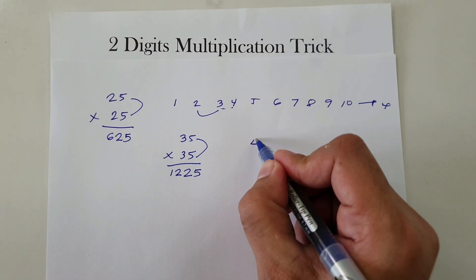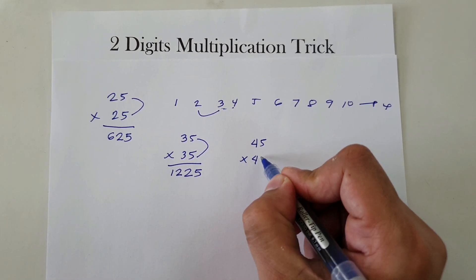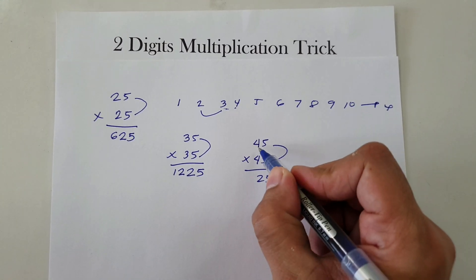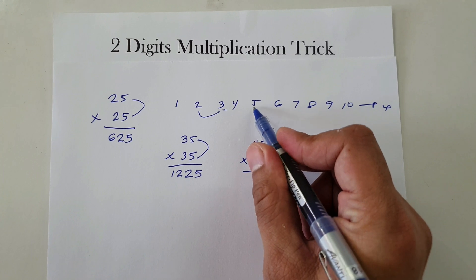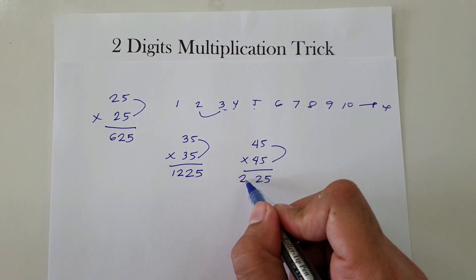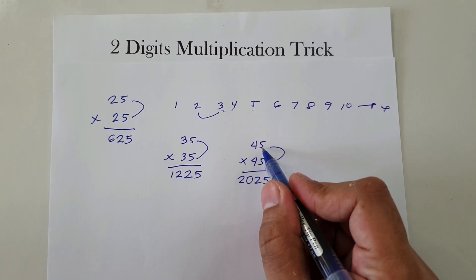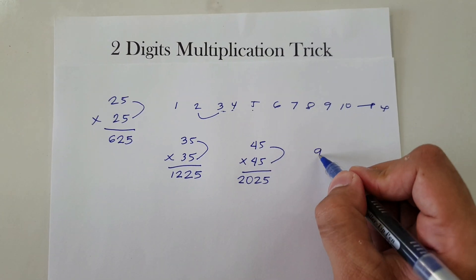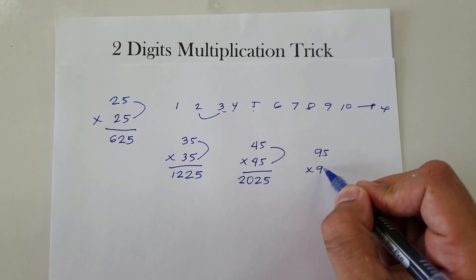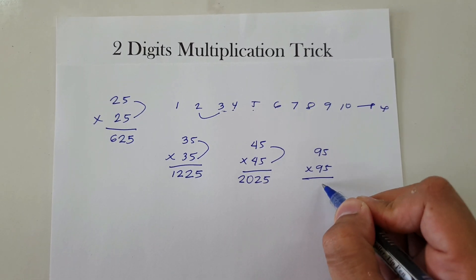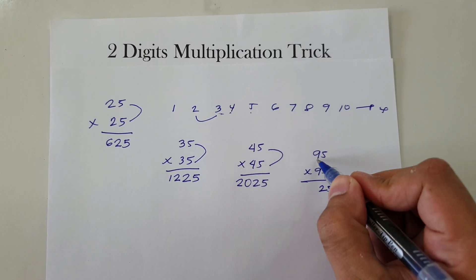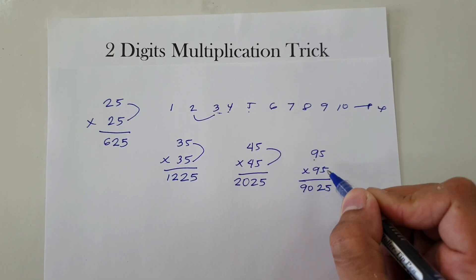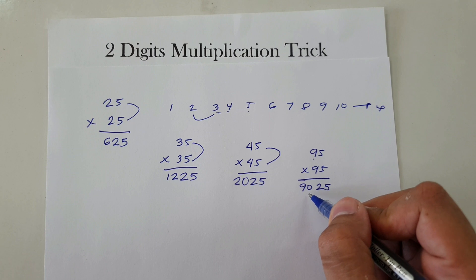Next, let's have 45 times 45. 5 times 5 is 25. The next number after 4 is 5, so 4 times 5 is 20. Therefore 45 times 45 is 2,025. Last example: 95 times 95. 5 times 5 is 25. The next number after 9 is 10, so 9 times 10 is 90. Therefore 95 times 95 is 9,025.